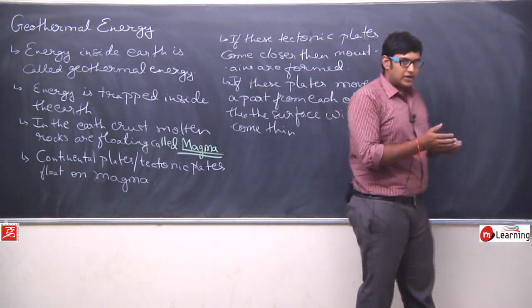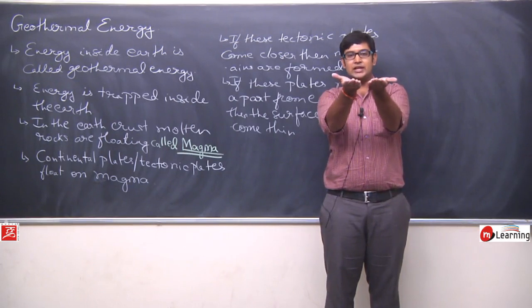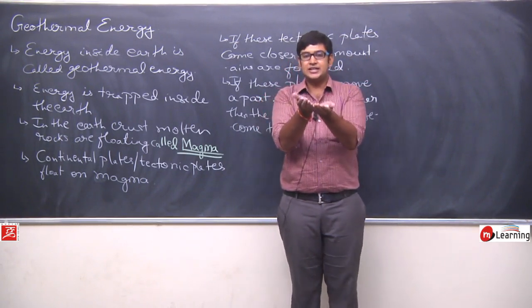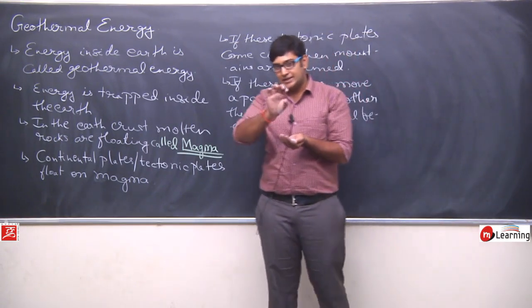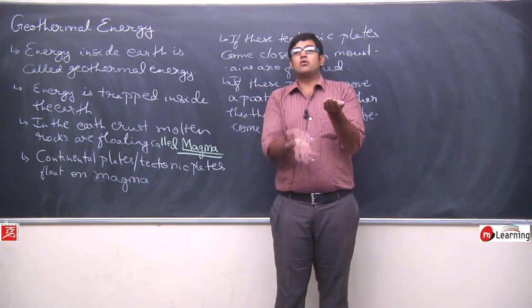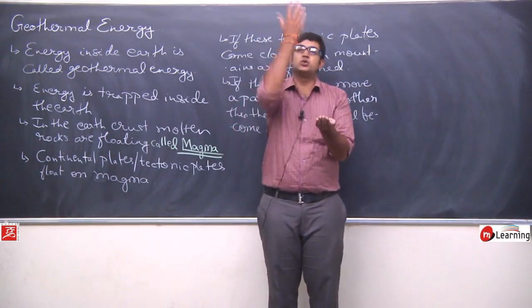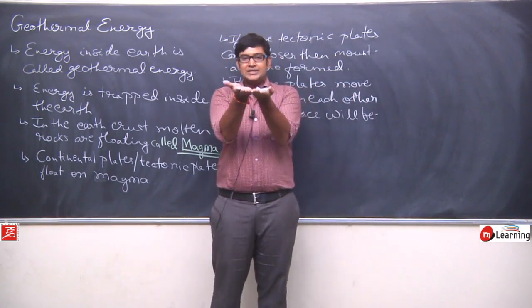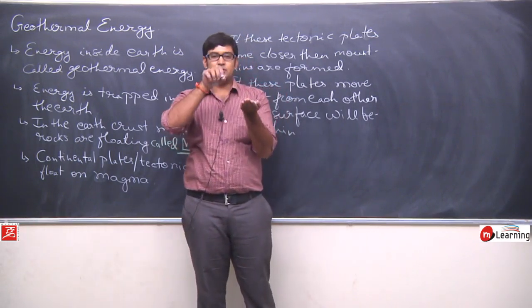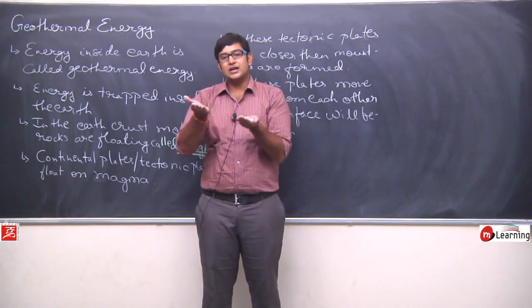When two tectonic plates are close and slowly start moving away from each other, the surface at their edges becomes gradually weaker and thinner. When the surface becomes thinner, the molten magma inside automatically tries to come upward, because a lot of heat is trapped in it. As it finds space, it shoots upwards. That's why in places where plates slowly separate, the surface becomes very thin, and because of that thinness, there is a lot of heat — the surface becomes very hot.